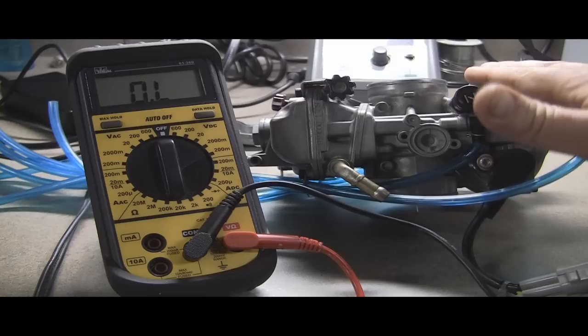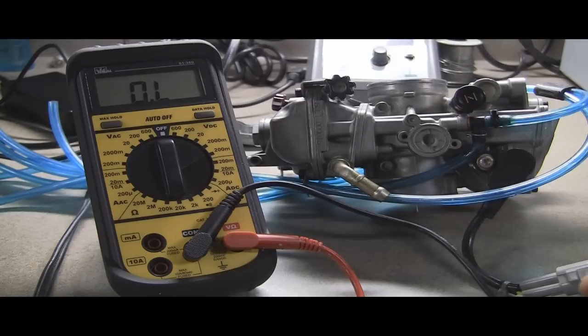In this case we're using my YZ250F carburetor with throttle position sensor already on there. This will work very similar for all models, but please keep in mind the ohm readings may be different.